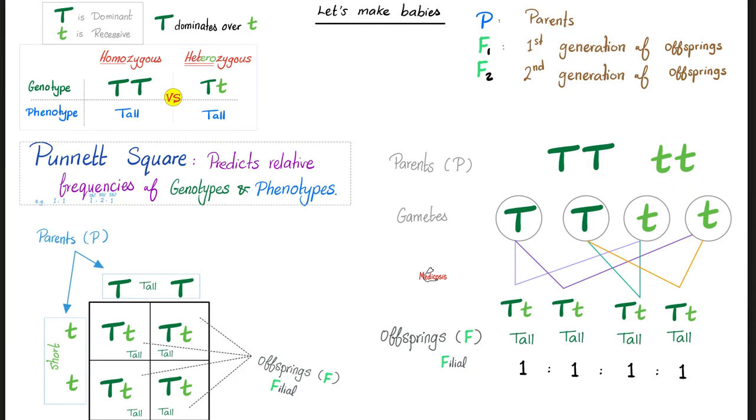First, we start with parents, then the first generation of the offspring, then the second generation of the offspring. By the way, we say P because it's for parents, but we do not say F for offspring, it's actually for filial. So let's put parents on the outside and offspring on the inside.